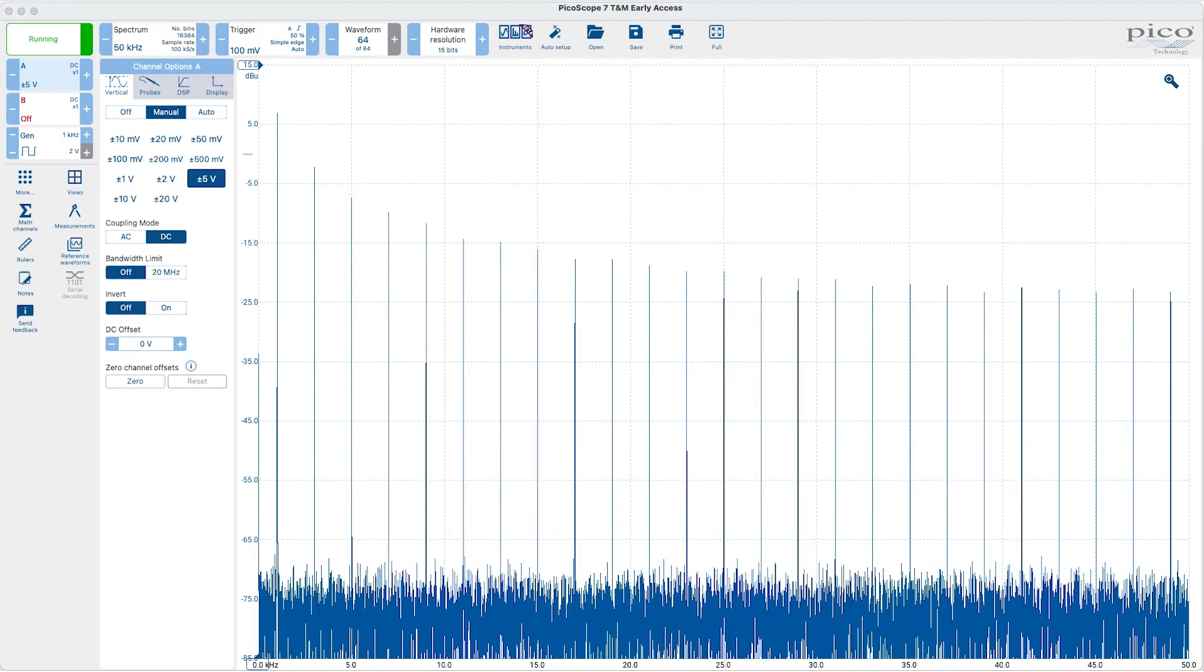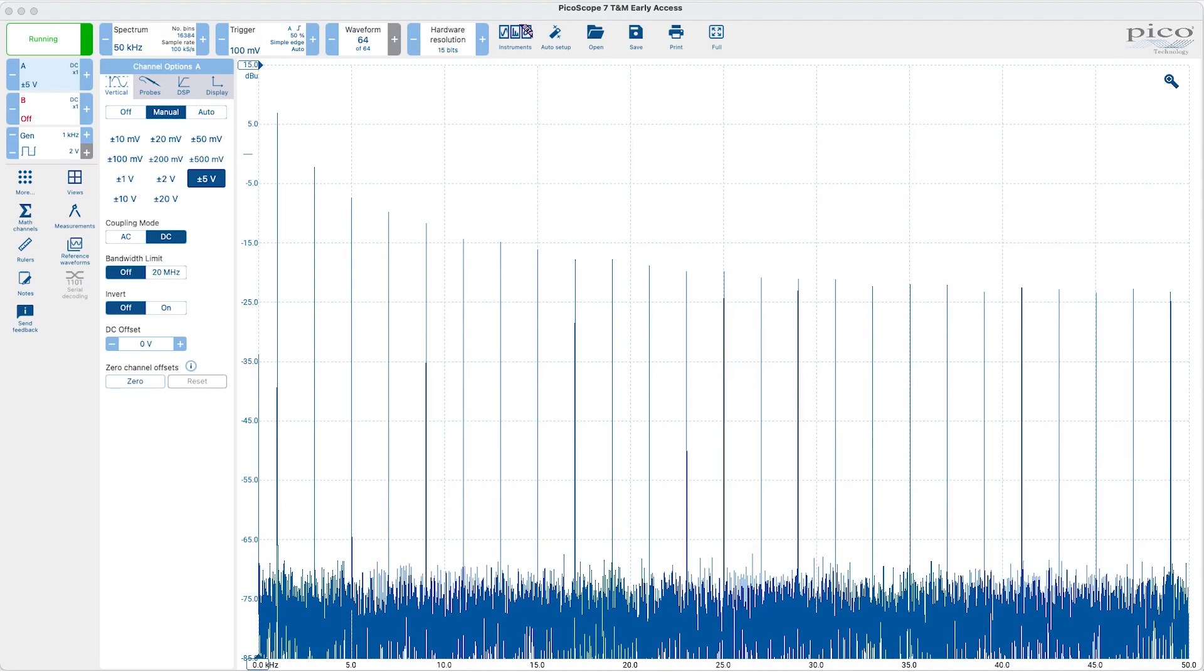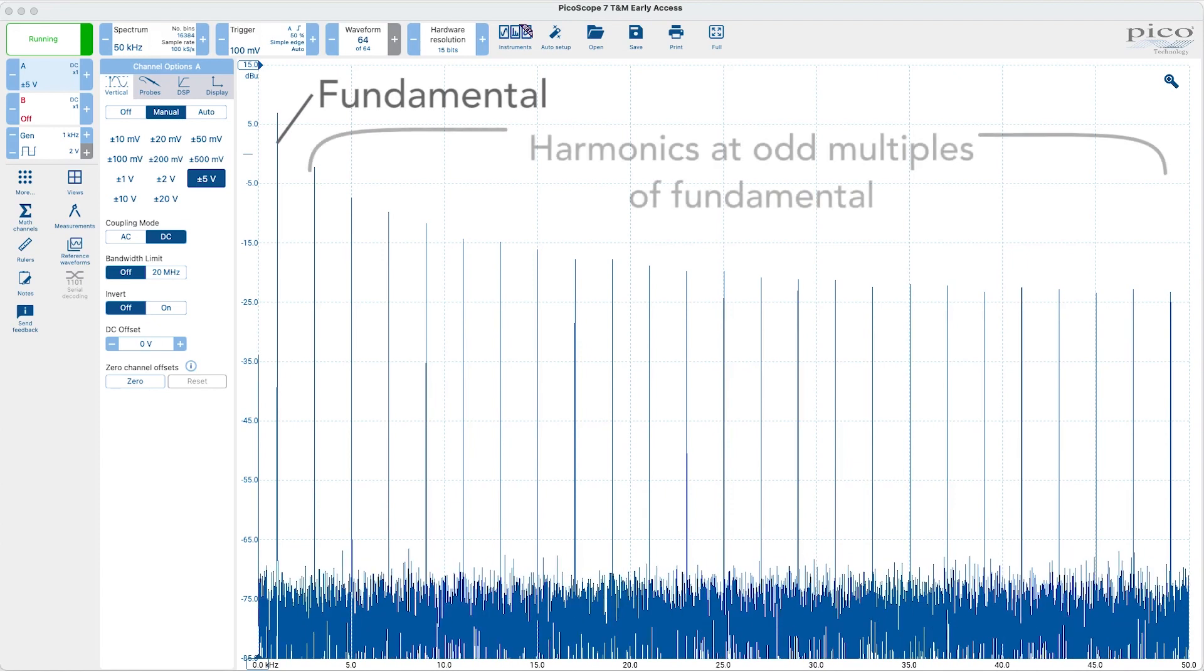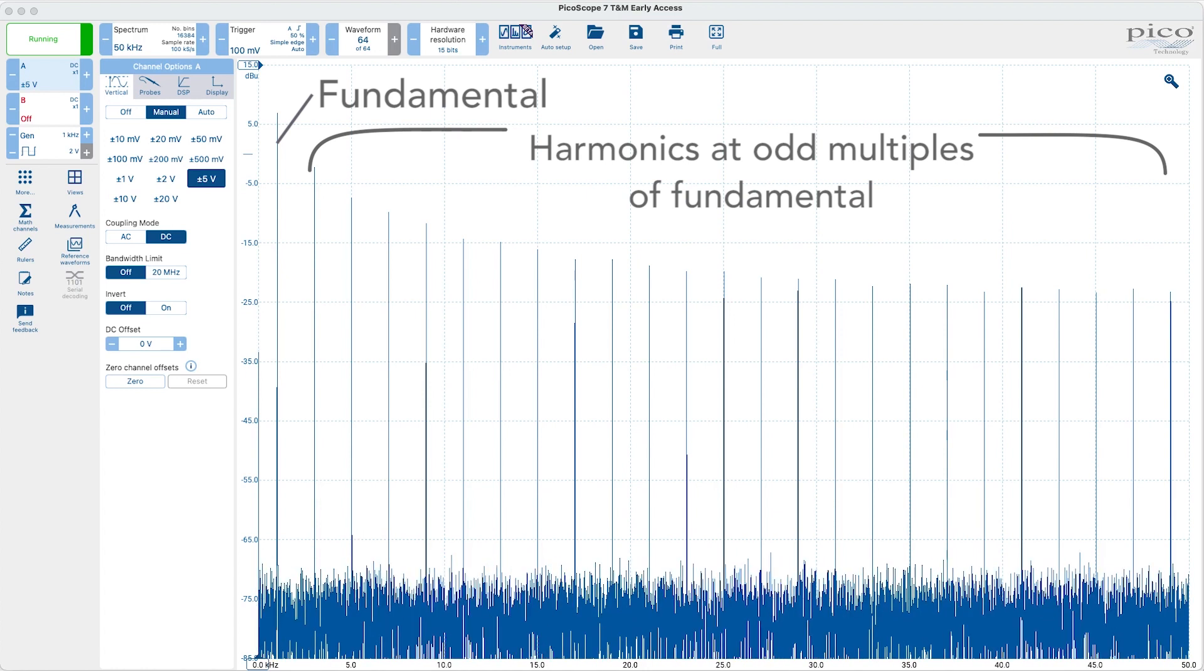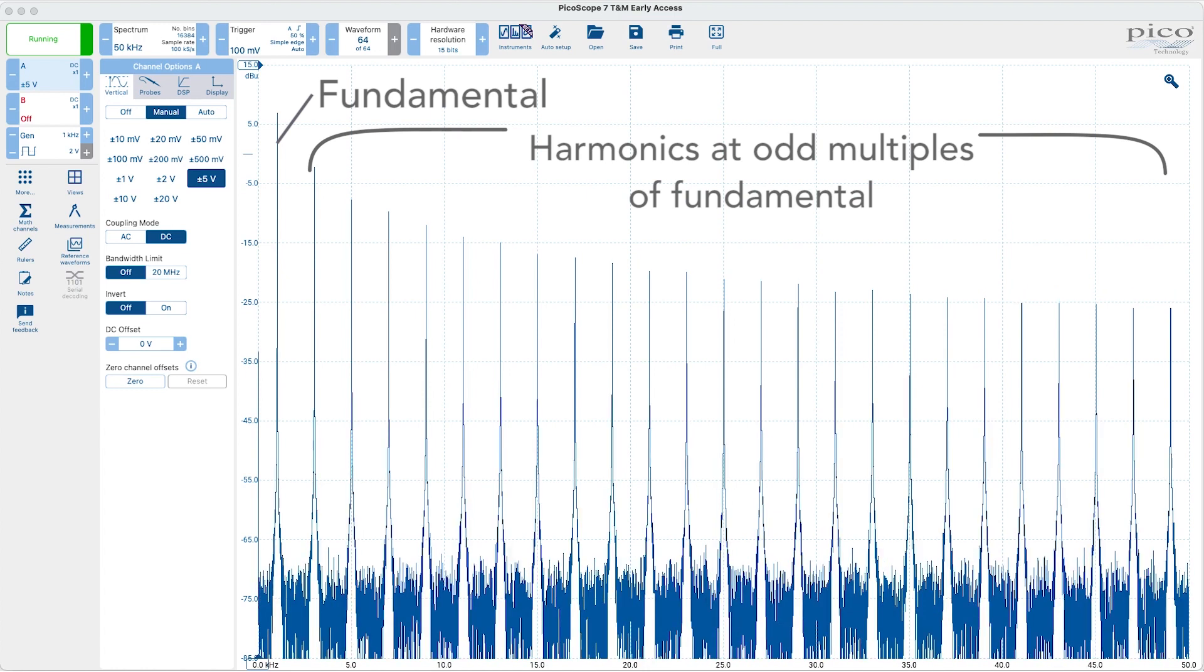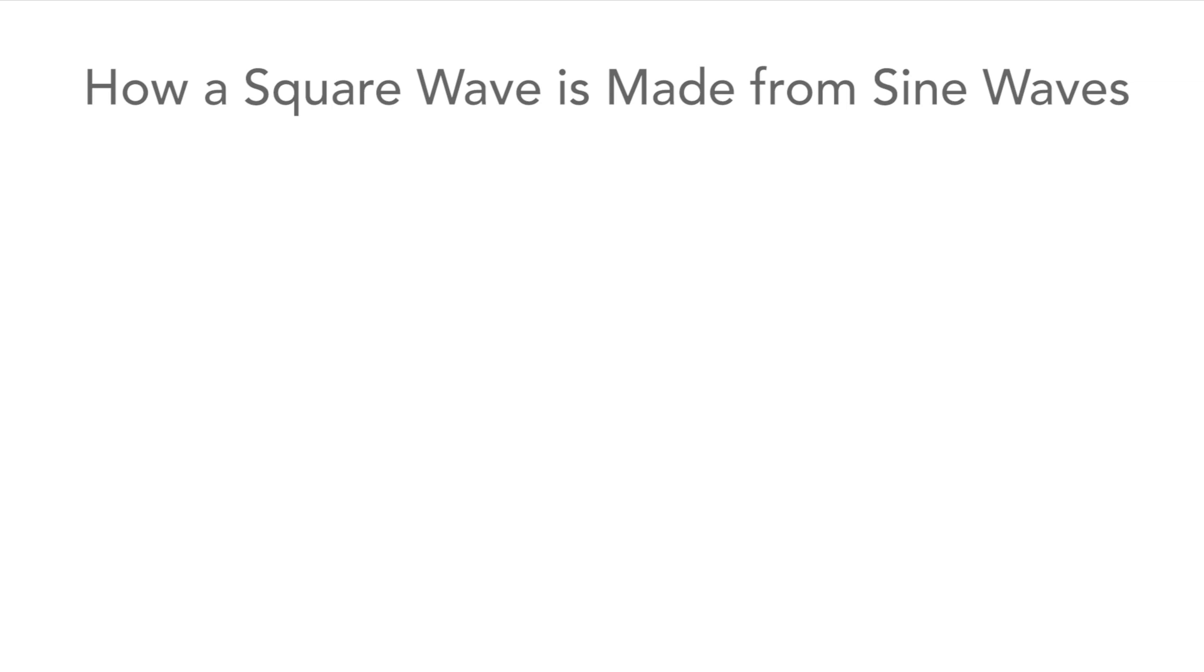If we look more closely we see that the signal consists of the fundamental and then harmonics at frequencies equal to the odd harmonics of the fundamental which is a sine wave. The fundamental has the same frequency as the basic repetition rate of the square wave and then different harmonics are added.